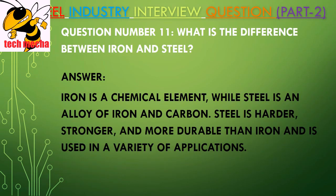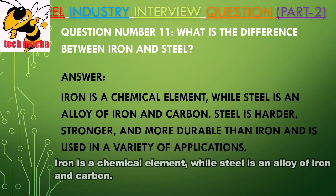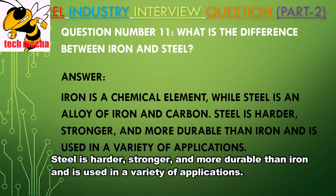Question Number 11: What is the difference between iron and steel? Answer: Iron is a chemical element while steel is an alloy of iron and carbon. Steel is harder, stronger, and more durable than iron.